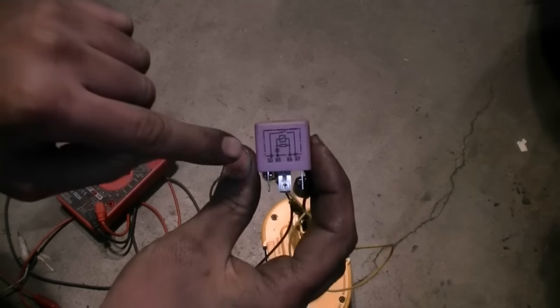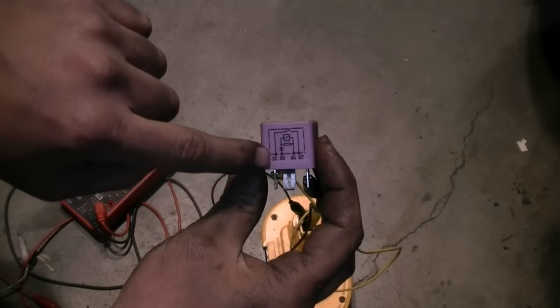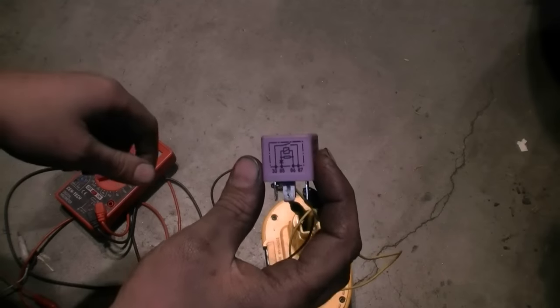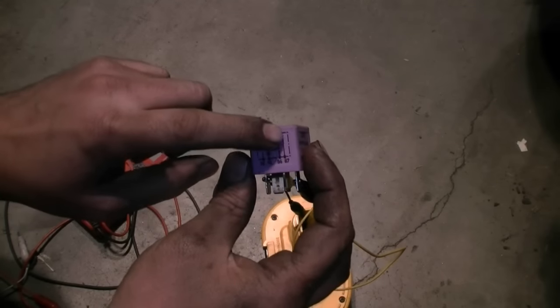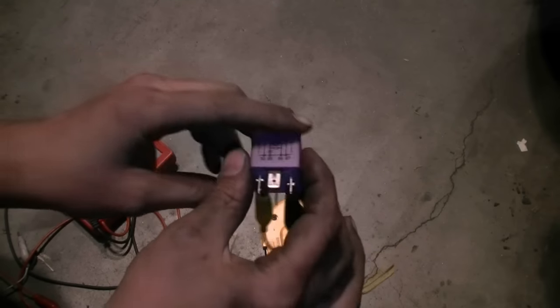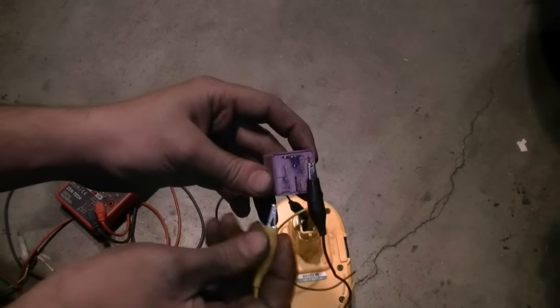You want to make sure there's no resistance in the circuit between 30 and 87, because you could hear a click but there could still be problems inside which would prevent the power from traveling freely between 30 and 87.